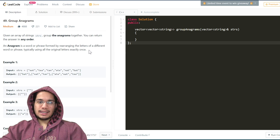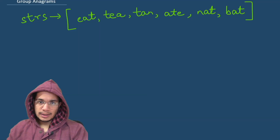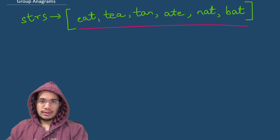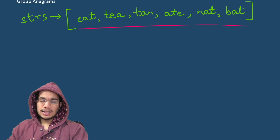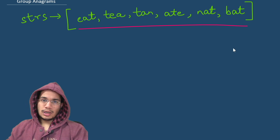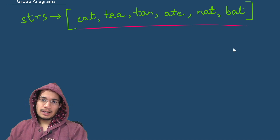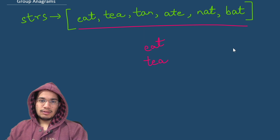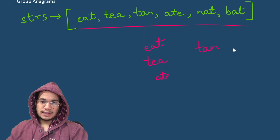Let's go over the explanation part. We have this list of strings and we are required to group them so that all the anagrams are together. Starting from the first one — eat. The second one, tea, has the same set of characters as eat, so it comes in the same group. The third one, tan, has a different set of characters, so tan goes in a separate group. Then ate again has the same set of characters as eat and tea, so those three are in the same group.